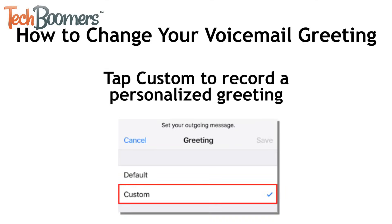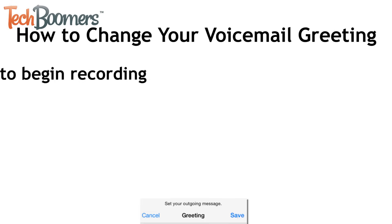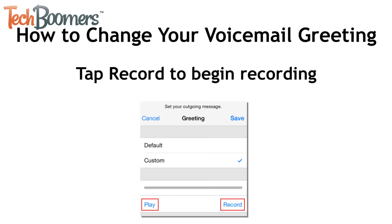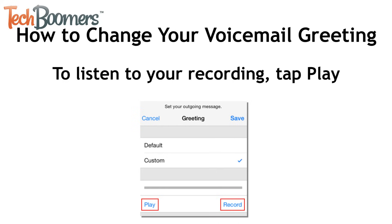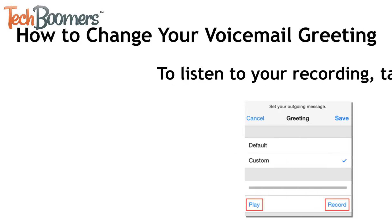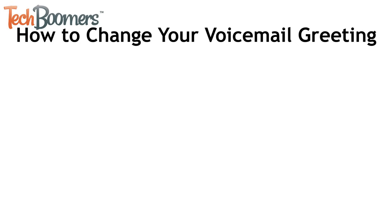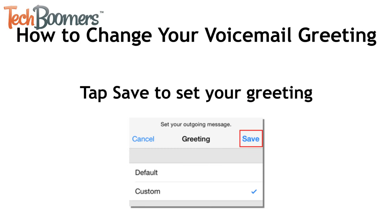Tap Custom to record a personalized voicemail greeting. This will give you options to record a new one. Now you can record your new personalized outgoing voicemail message. To begin, tap Record. To listen to your recording, tap Play. When you finish recording and are satisfied with your new voicemail greeting, tap Save in the top right corner of your screen.